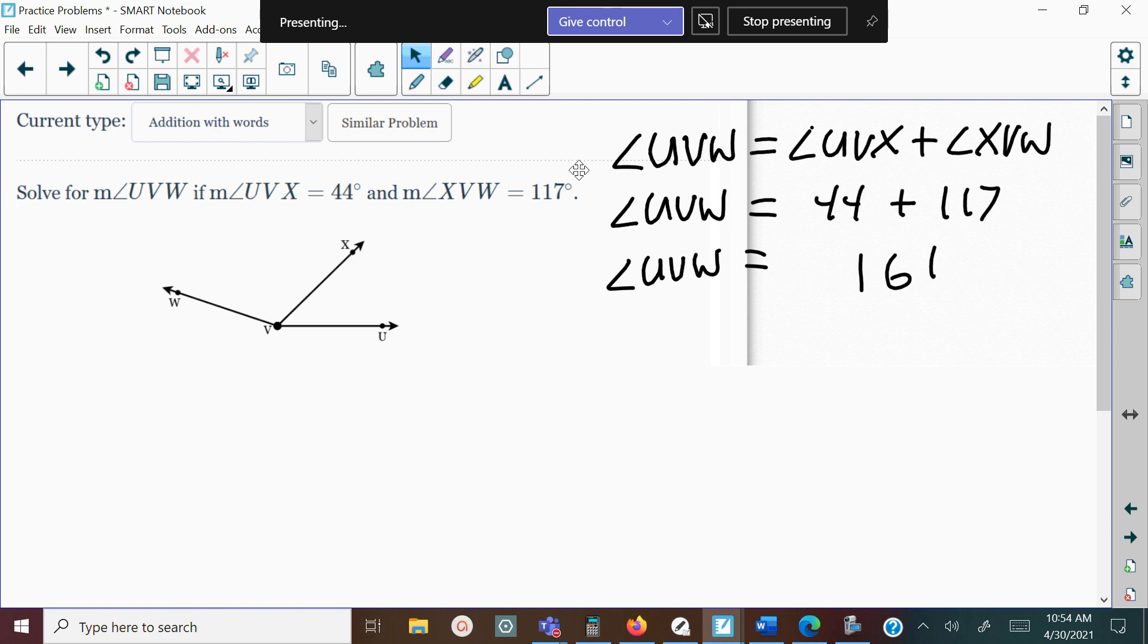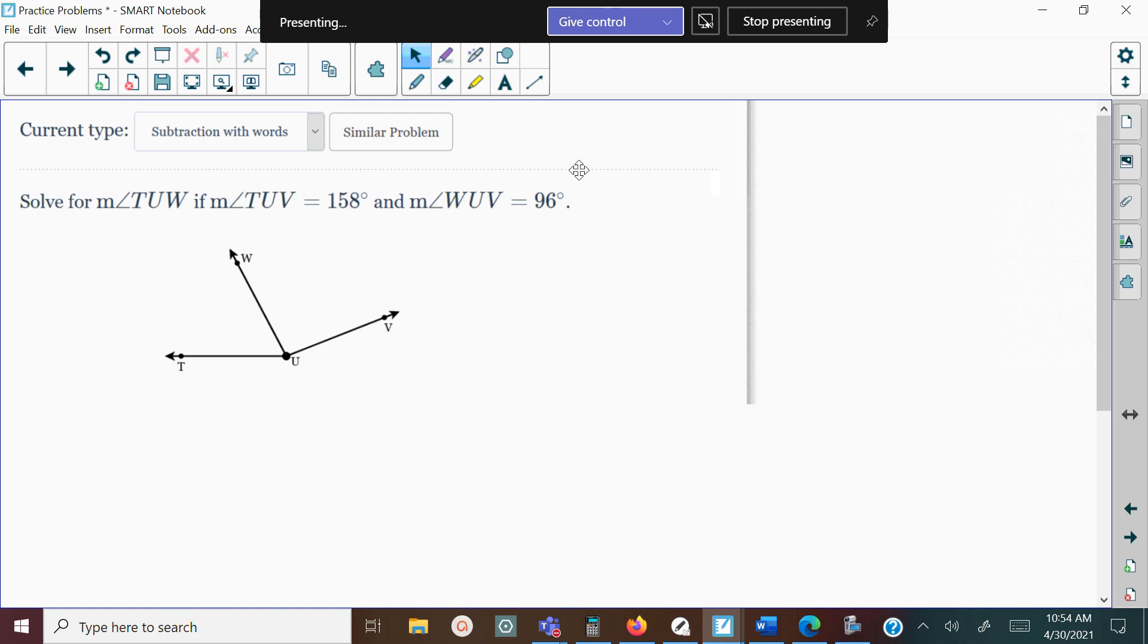Let's take a look at an example of subtraction. We're looking for angle TUW. If the measurement of angle TUV equals 158 and the measurement of angle WUV equals 96, you got the big angle. Similar to what we did before, just start off writing it out with letters and then plug in your numbers. That way you never mess it up. We'll start off with the big angle here.